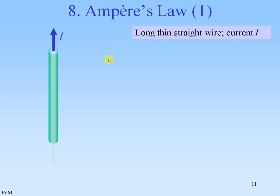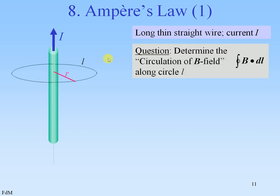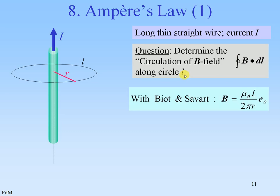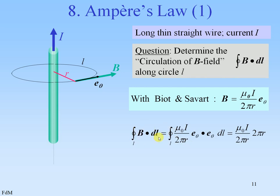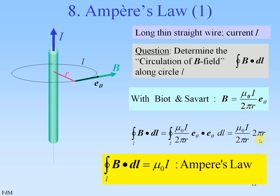Point 8: Ampere's law. We have a long, thin, straight wire with a current i. The question is: determine the circulation of the B-field along circle L. We have Biot-Savart, as seen before: mu0·i over 2πr, with cylindrical symmetry. When we calculate it for this current circuit, we have the expression for B times the direction vector e-theta times dl, and dl is e-theta·dl. So we have a scalar product of e-theta times e-theta, which is 1. The integration over the circuit is simply 2πr. And so the circuit integral of B·dl is just mu0 times the current. That is Ampere's law.